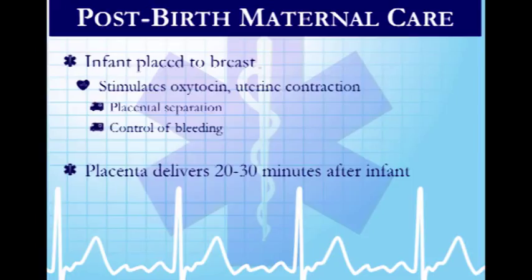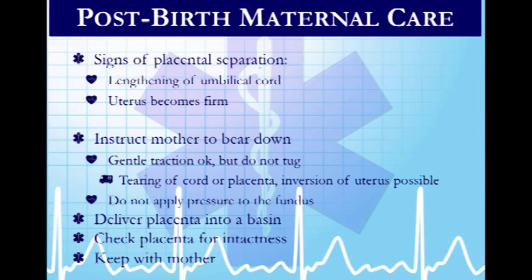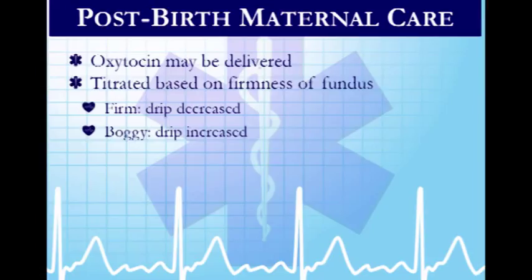After birth, placing baby at the breast stimulates oxytocin and promotes uterine contractions to complete the birthing process. The placenta delivers about 20 to 30 minutes after the baby. You can tell it's coming when the cord starts to lengthen. Apply gentle traction only — don't tug or put pressure on the fundus. The placenta should be kept with mom until she reaches her destination.